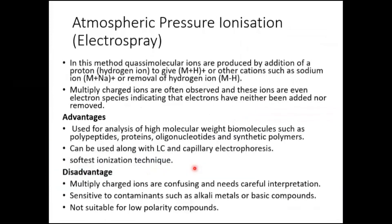The advantages of electrospray ionization include its use for analysis of high molecular weight biomolecules such as polypeptides, proteins, oligonucleotides, and synthetic polymers. It can also be used along with liquid chromatography and capillary electrophoresis. It is the softest type of ionization technique, so you will properly get the molecular ion peak with very little fragmentation.